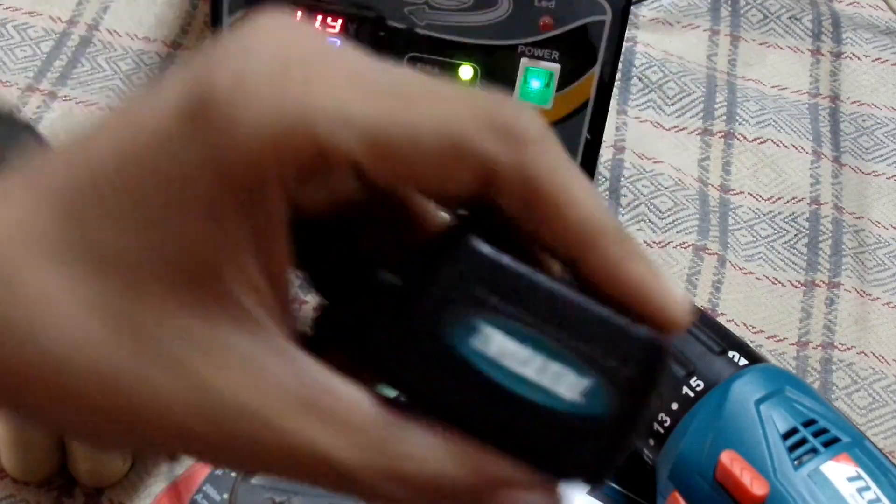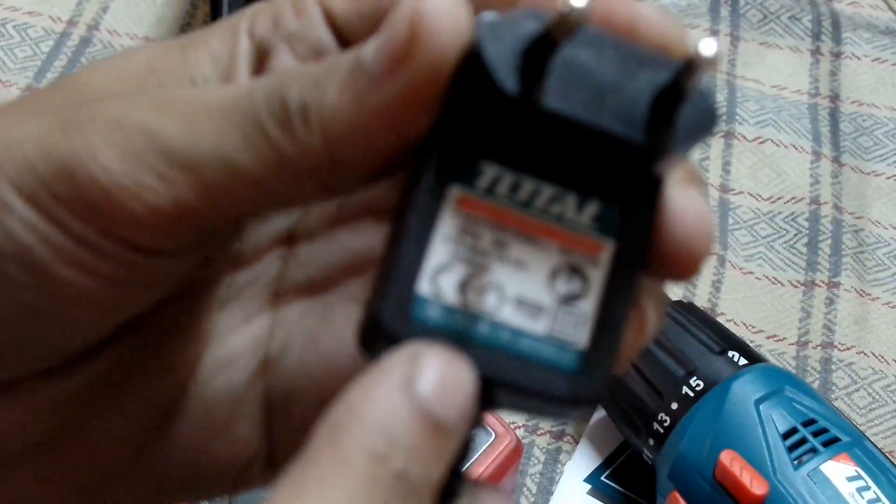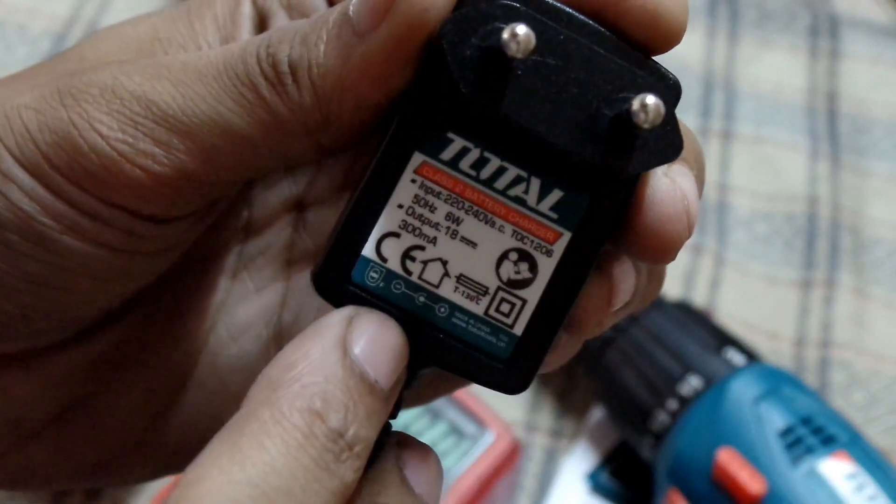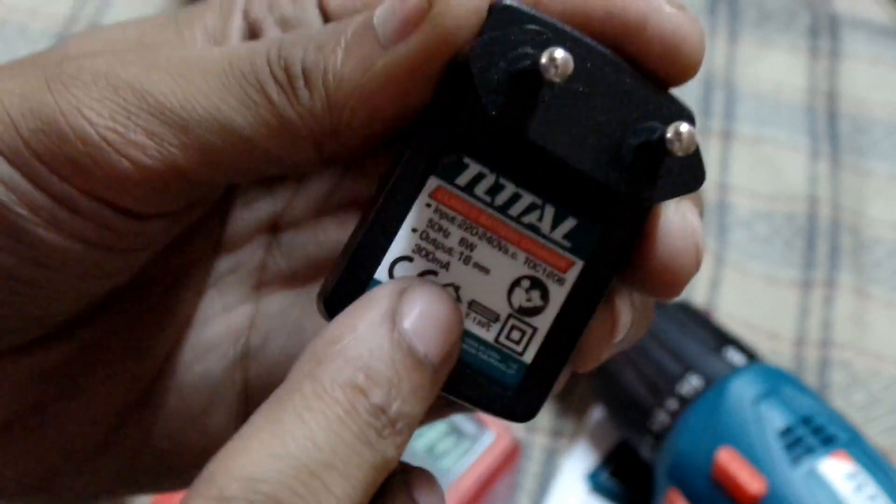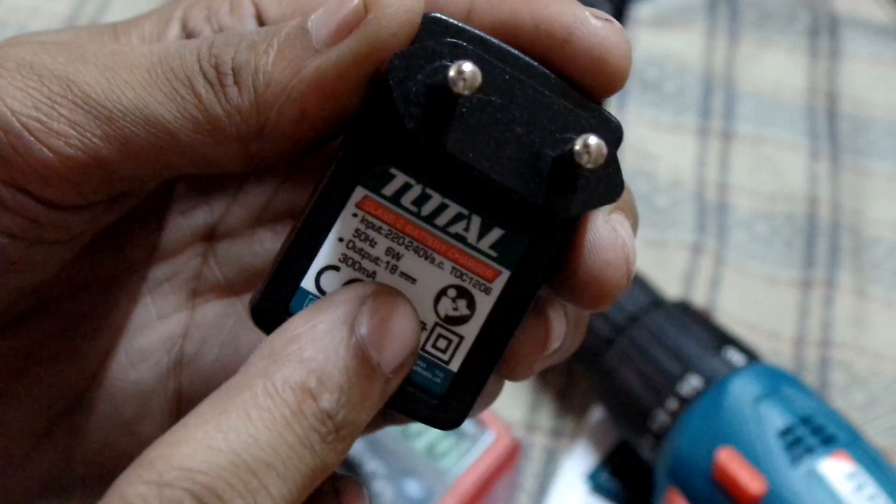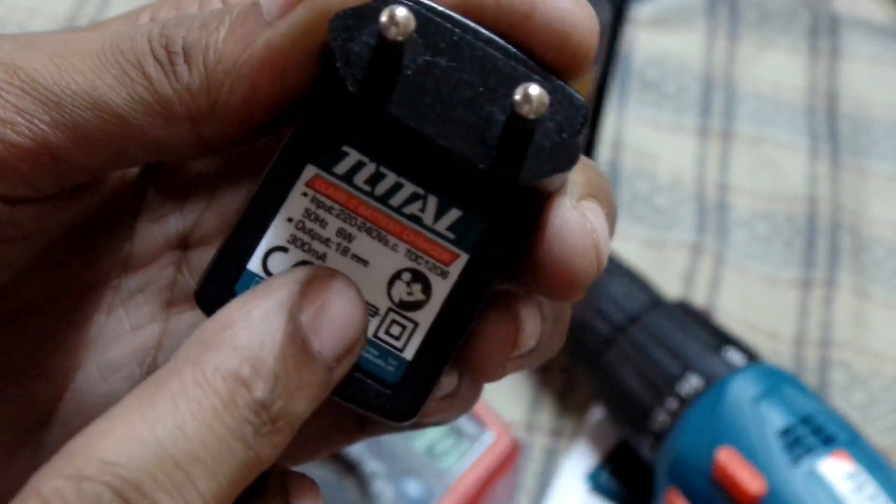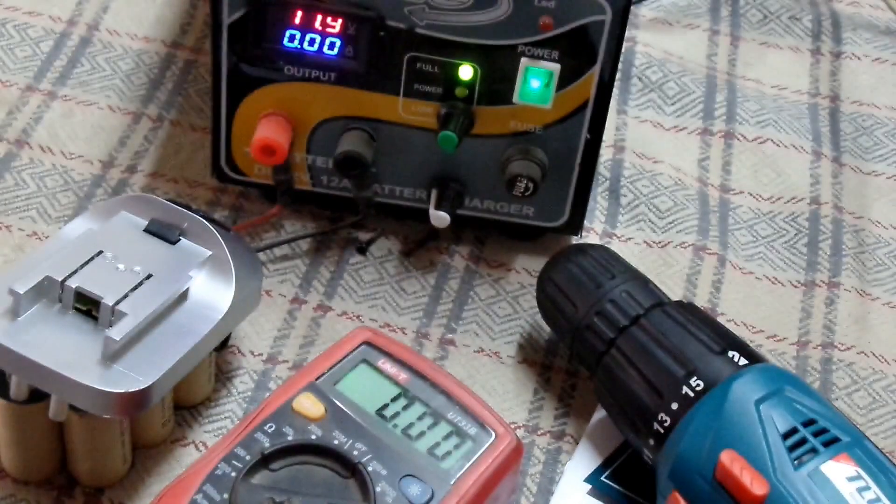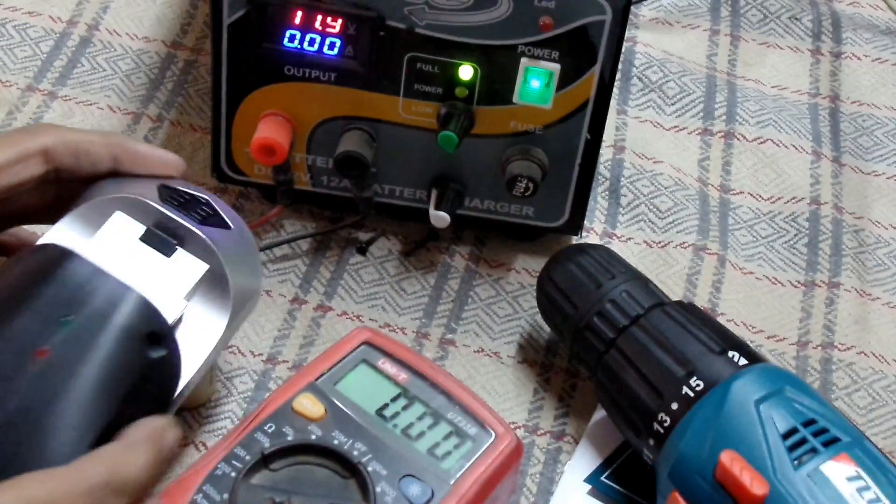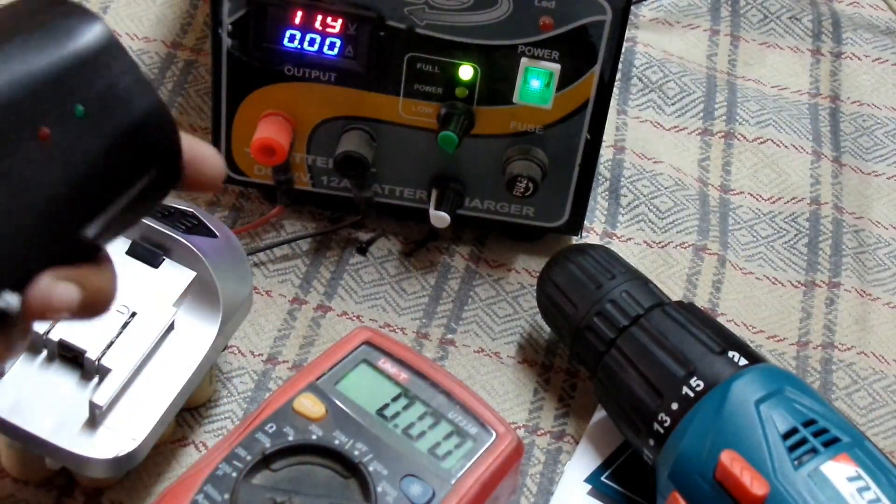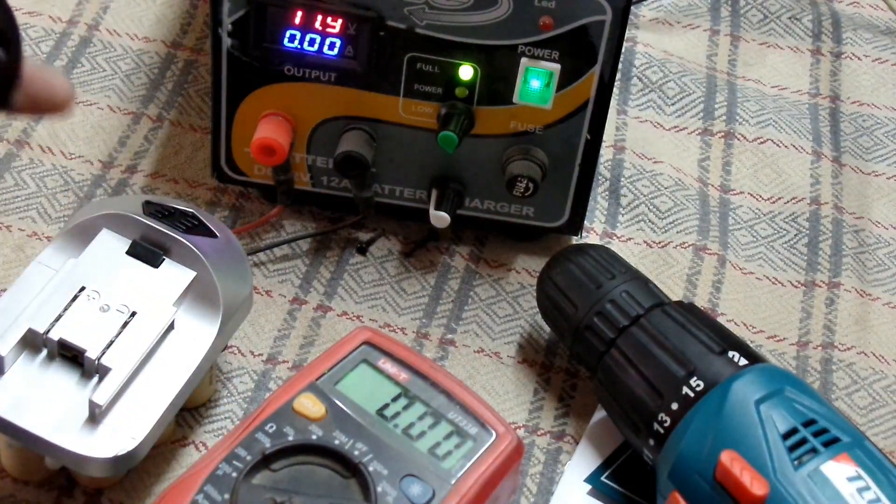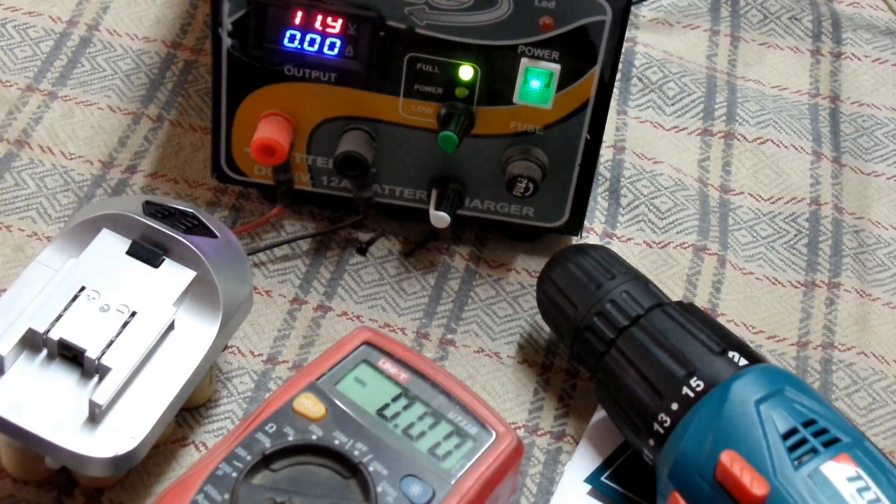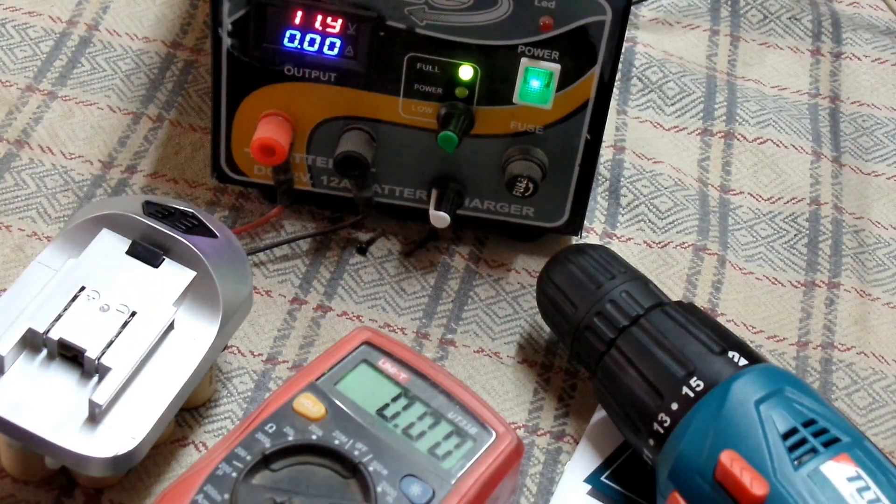Now we're gonna talk about the battery. They provided this adapter which is 18 volts, while the batteries are 12 volts because there are 10 cells of 1.2 volts in the battery case. These batteries are NiMH and this adapter is just used for the cutoff function.